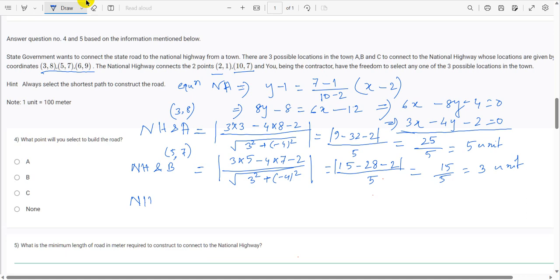Distance between national highway and point C. Coordinate of point C is 6, 9 so 3 into 6 minus 4 into 9 minus 2 divided by root of 3 squared plus minus 4 squared. 18 minus 36 minus 2 divided by 5. It is 20 by 5 so it is 4 units.